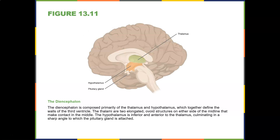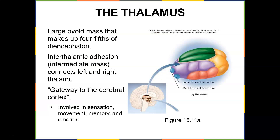The cerebellum handles muscular coordination and fine motor control. The diencephalon is very important — that's where the thalamus, hypothalamus, and epithalamus are. The diencephalon is composed primarily of the thalamus and hypothalamus. The thalamus is a large ovoid mass that makes up four-fifths of the diencephalon, with an interthalamic adhesion connecting the right and left thalami.